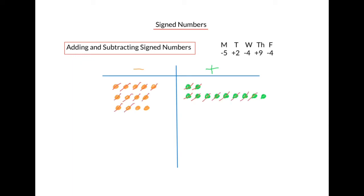So we go through and cross out corresponding pairs of dots. When we're done, we count up how many dots are left. In this case, 2 yellow dots. Since yellow is negative, the answer is negative 2. In other words, adding and subtracting these sign numbers results in negative 2.